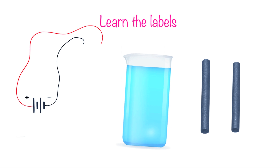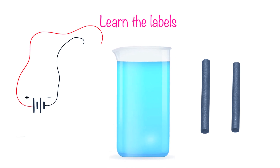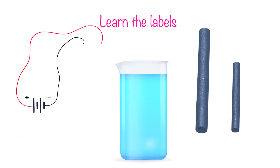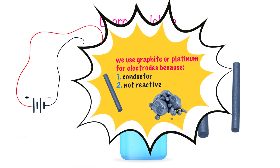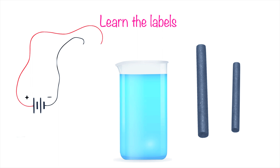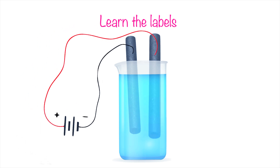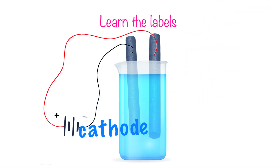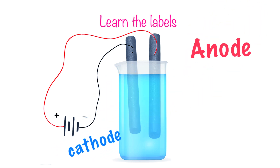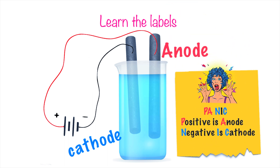To do electrolysis, you need a cell with a molten or dissolved ionic compound, and electrodes — usually made of graphite or platinum. Both substances are good conductors of electricity and are quite unreactive, so they won't interfere with the products of electrolysis. The graphite electrodes are placed into the ionic compound and connected to a battery through wires. Once connected, one electrode becomes positive and the other negative. The negative electrode is called the cathode, and the positive electrode is called the anode.